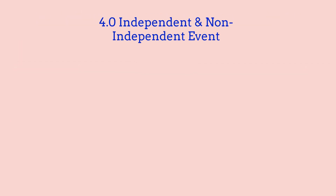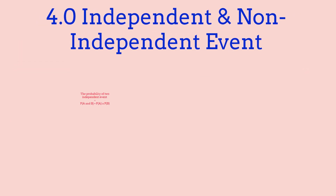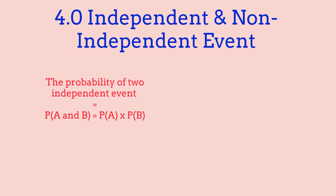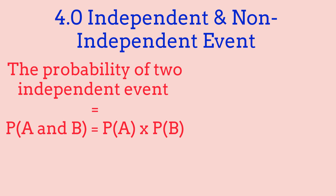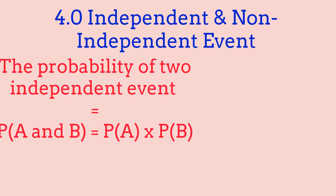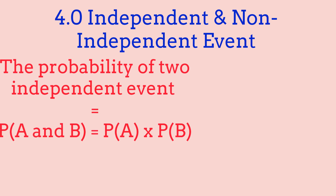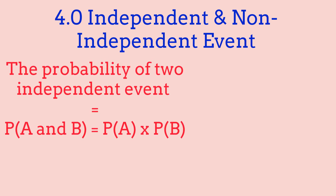Now let's go over independent events and non-independent events. Basically, the probability of two independent events is the product of probability of event A and probability of event B. So our formula is: probability of A and B equals probability of A times probability of B. To calculate independent events, we just multiply probability A and probability B.